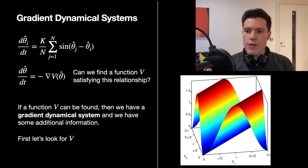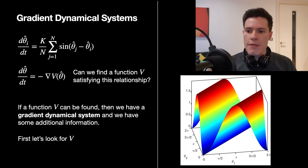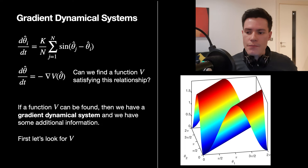To finish, we look at gradient dynamical systems, which help explain why some fixed points are stable, unstable, or saddle nodes. We need to identify a function V of all the theta-hats such that the negative of the gradient of V equals our original dynamical system. If such a function V can be found and it's continuous, infinitely differentiable, and bounded, we'll get additional information about the system.